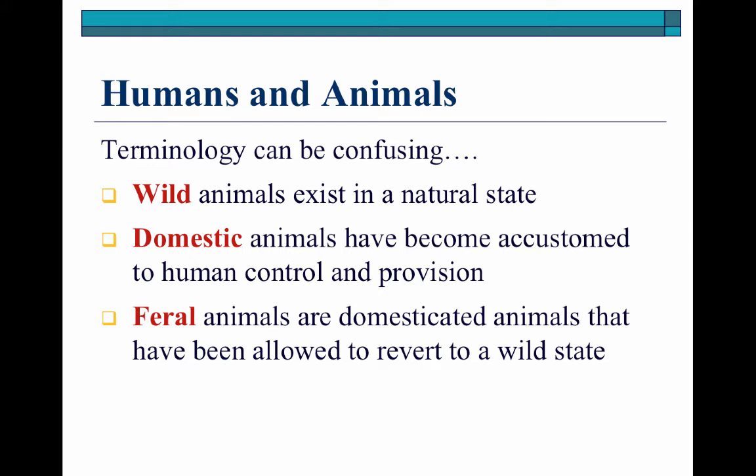Let's make sure that we have our terminology down. A wild animal refers to an animal that exists in its natural state. Our wildlife species are going to be really vast — anything from deer, elk, moose, pronghorn, bears, mountain lions, any of those wild animals. A domestic animal is going to be an animal that has really become accustomed to human control and provision. This whole dynamic between the domestic animals and the feral animals gets to be a very large gray area.